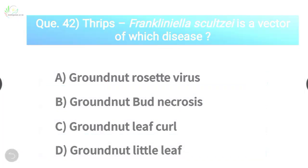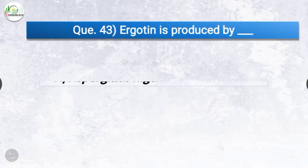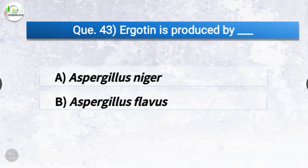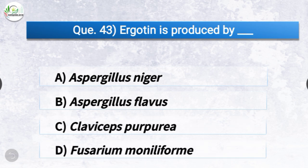Question number forty-three: Ergotine is produced by dash. The options are Aspergillus niger, Aspergillus flavus, Claviceps purpurea, or Fusarium moniliforme. The correct answer is option C, Claviceps purpurea. Ergotine is produced by Claviceps purpurea.